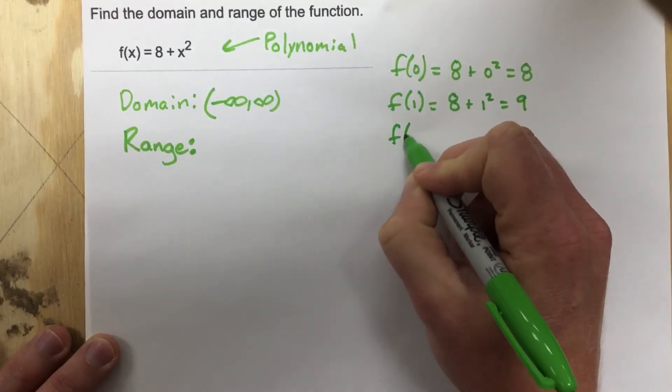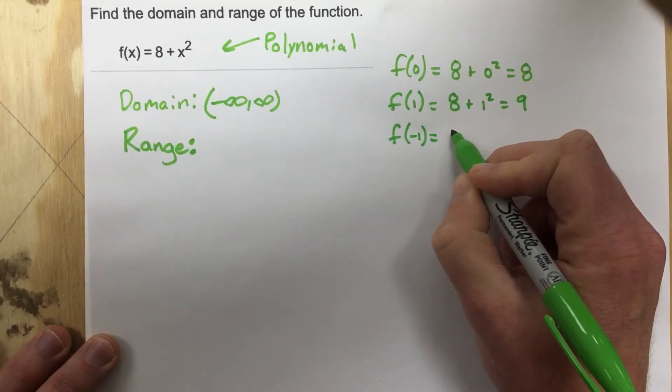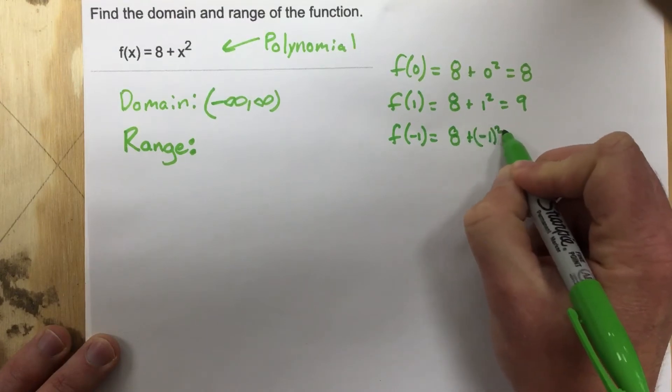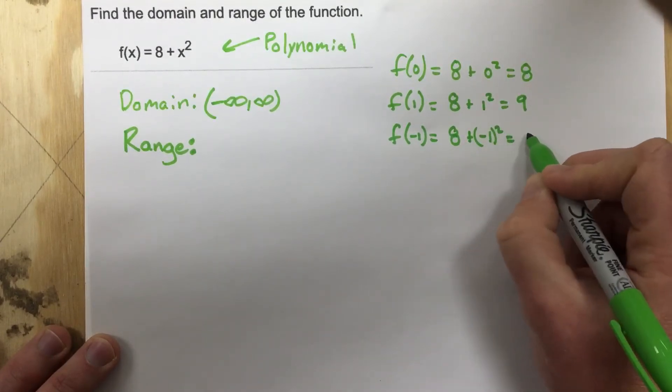And let's do f(-1). So I end up with 8 plus (-1) squared, which is 8 plus 1, so I end up with 9 as well.